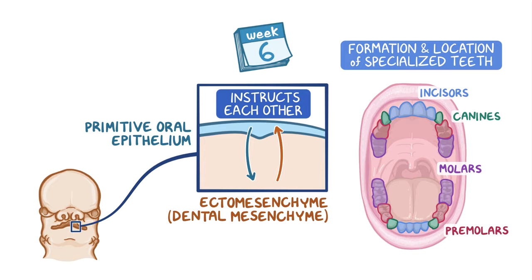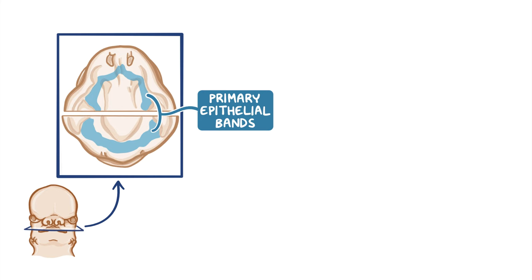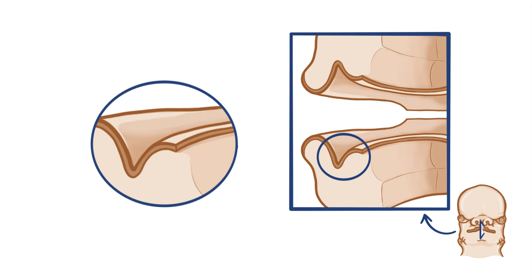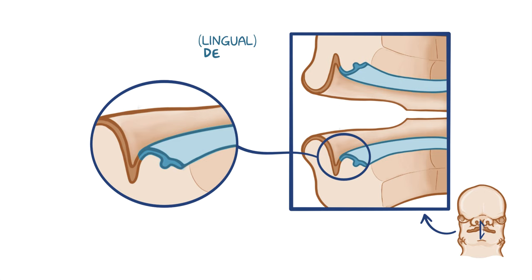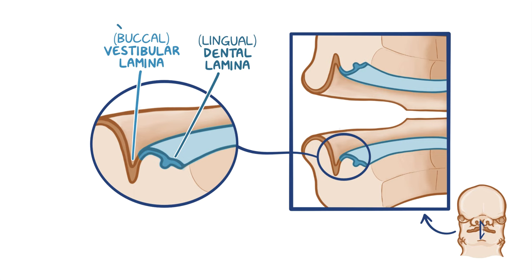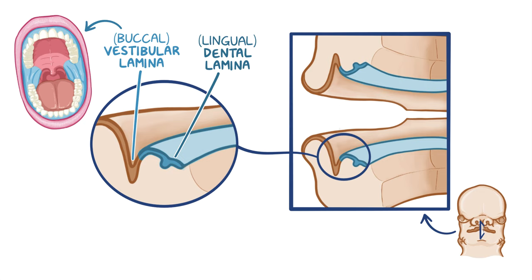Tooth development starts with the thickening of the primitive oral epithelium, known as the primary epithelial bands — one on each jaw. Each primary epithelial band soon splits into two: an inner or lingual dental lamina, and an outer or buccal vestibular lamina. The vestibular lamina subsequently hollows and forms the vestibule of the mouth, which is the space between the alveolar portion of the jaws, lips, and cheeks.